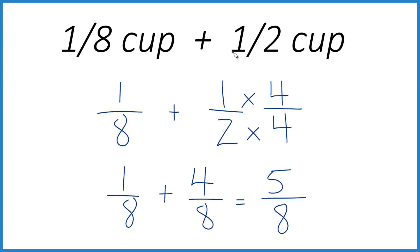That's it. This is Dr. B adding 1 eighth of a cup plus 1 half cup. You end up with 5 eighths of a cup.